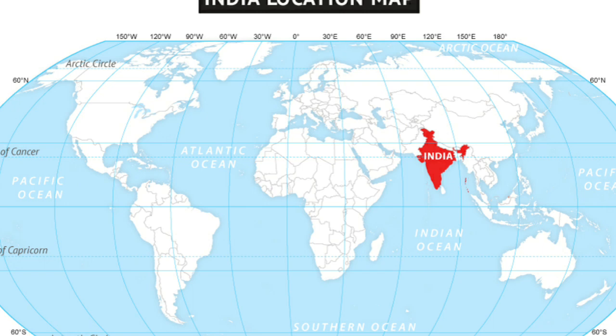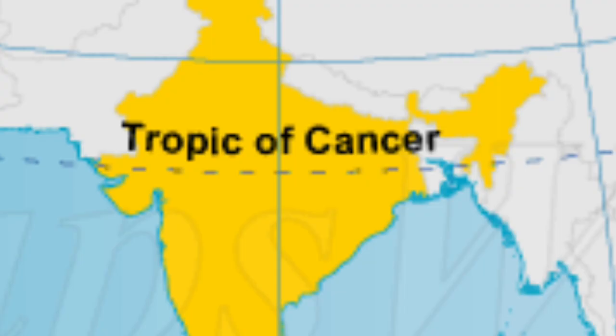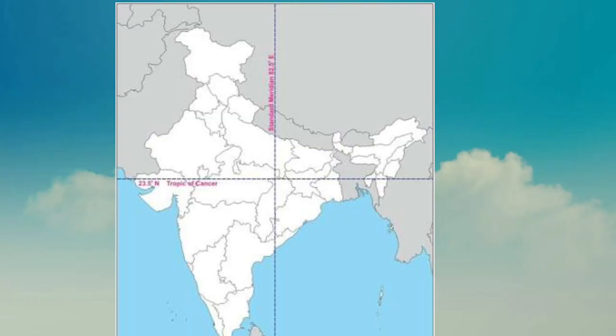The southernmost point of the Indian Union is Kanyakumari. With the opening of the Suez Canal in 1869, India's distance from Europe was reduced by 7,000 kilometers. The Tropic of Cancer passes through the states of Gujarat, Rajasthan, Madhya Pradesh, Chhattisgarh, Jharkhand, West Bengal, Tripura and Mizoram. The longitude 82 degrees 30 minutes east, passing through Mirzapur, is considered the standard meridian of India.